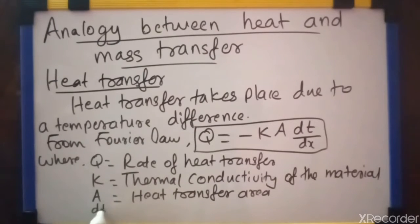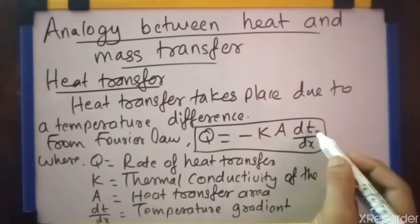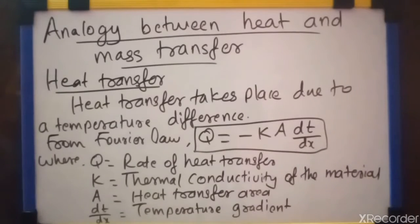DT by dx is the temperature gradient. Temperature gradient means change of temperature with respect to distance, change in distance.